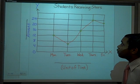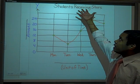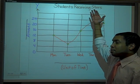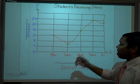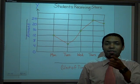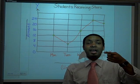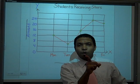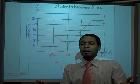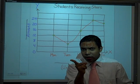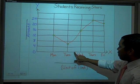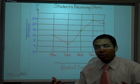We have a line graph that's already been drawn for us. This happens to be a line graph showing students receiving stars. At the very top you will see the title. On the x-axis of a line graph, it's going to show you the measurement of time. Time will always go from left to right, just as you see a timeline.